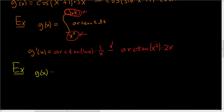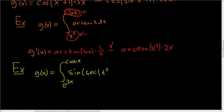Let's make it look ridiculous. Little g of x equals the definite integral from e to the 3x to cosh of x of sine of the secant of t squared plus 4, dt. This looks absolutely ridiculous and really, really hard.